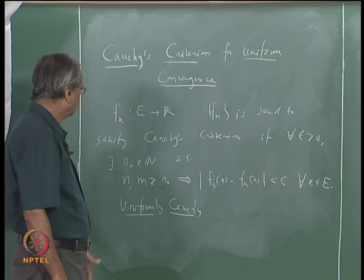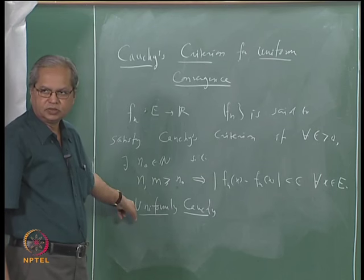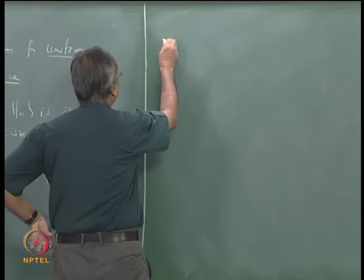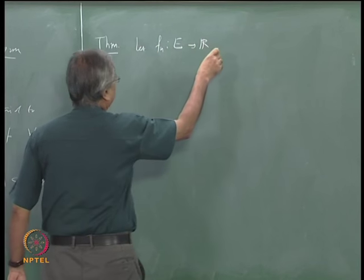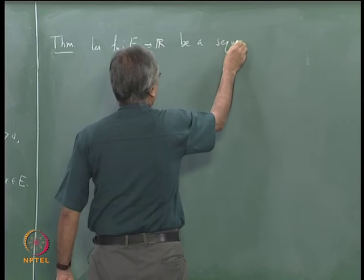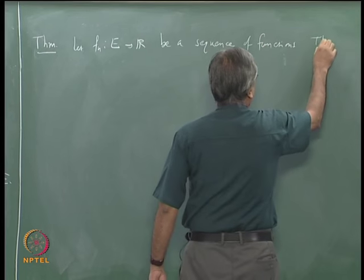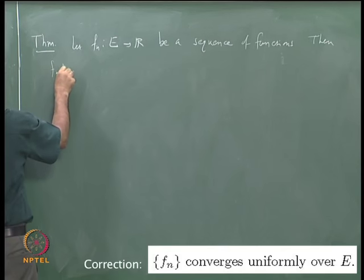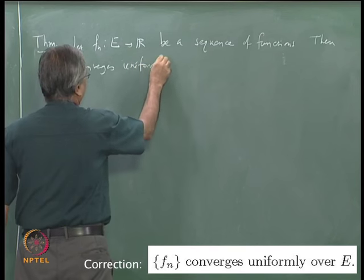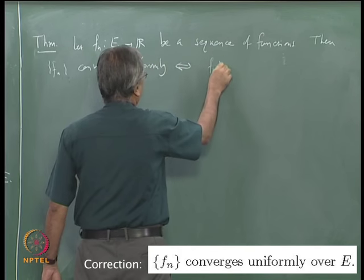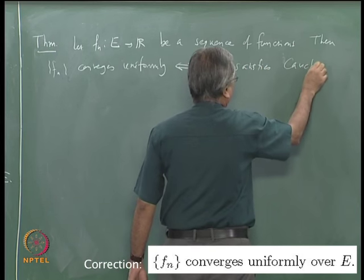The Cauchy criteria states that a sequence of functions converges uniformly if and only if it satisfies this Cauchy criteria. That is the theorem: let f_n from E to R be a sequence of functions; then f_n converges uniformly if and only if f_n satisfies Cauchy's criteria.